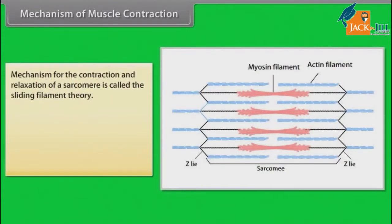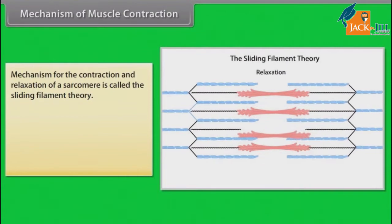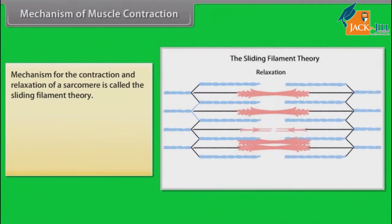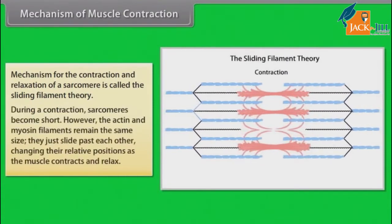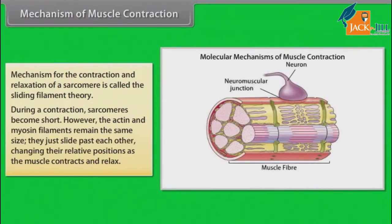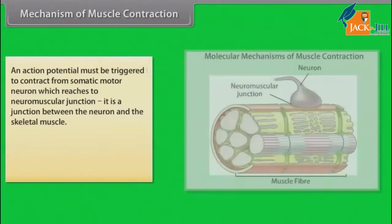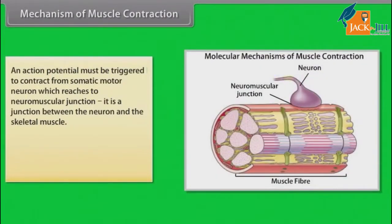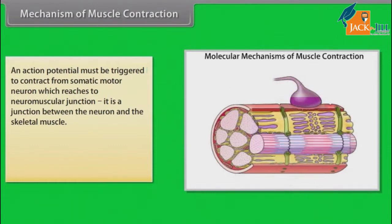The mechanism for the contraction and relaxation of a sarcomere is called the sliding filament theory. During a contraction, sarcomeres become short; however, the actin and myosin filaments remain the same size — they just slide past each other, changing their relative positions as the muscle contracts and relaxes. An action potential must be triggered from a somatic motor neuron which reaches the neuromuscular junction.